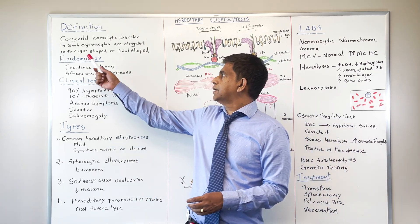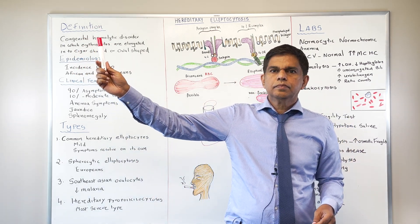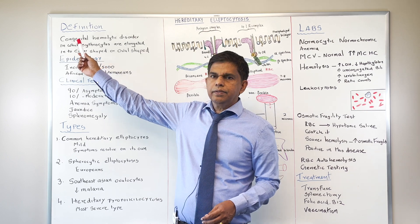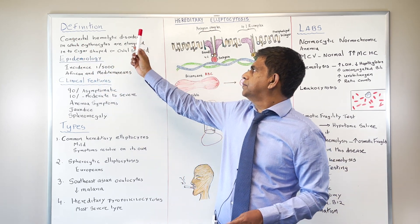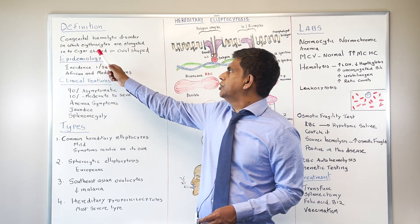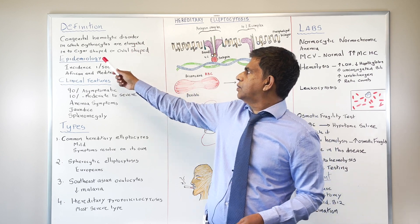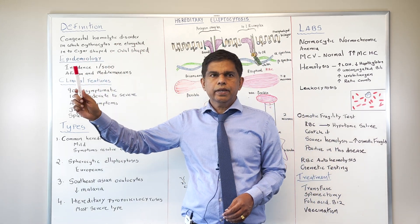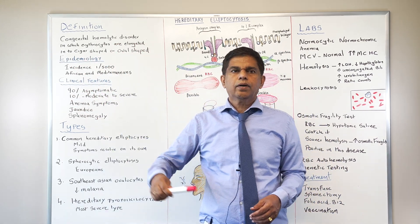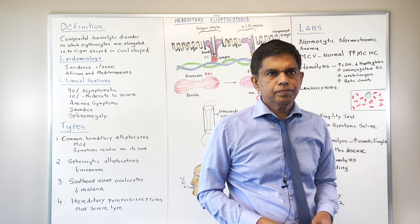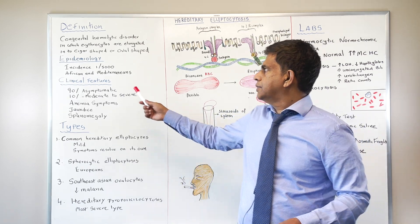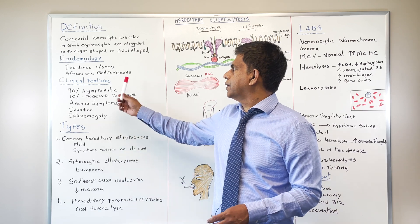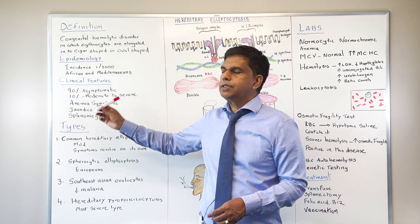It's a congenital, hereditary hemolytic disorder in which erythrocytes are elongated or cigar-shaped. The incidence is about 1 in 5,000, and it's more common in African and Mediterranean populations.